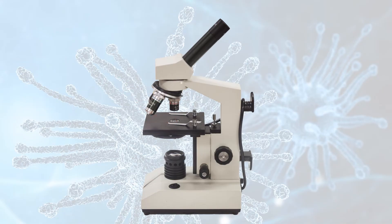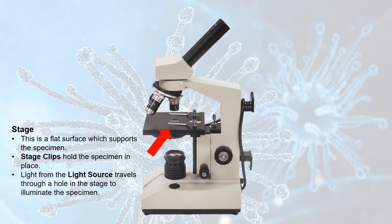The stage, which is the part of the microscope right here, is a flat surface which supports the specimen that you're looking at. On top of the stage, you have two stage clips, one on each side of the stage. You can see them here. These are used to hold the slide with your specimen in place while you're viewing it. There is also a hole in the center of the stage right here. This allows light from the light source to travel up through the stage to light up or illuminate the specimen.